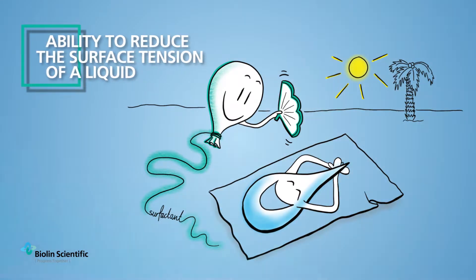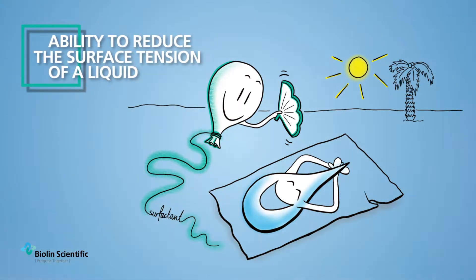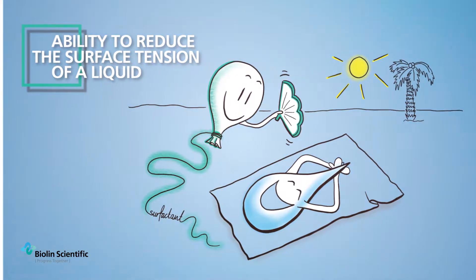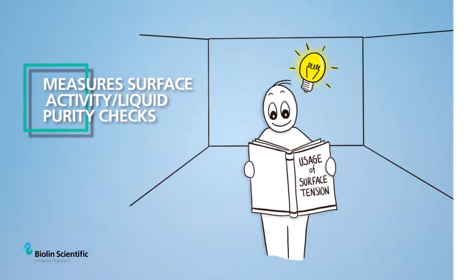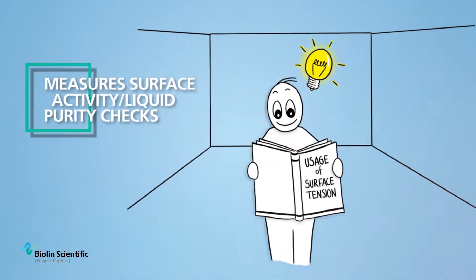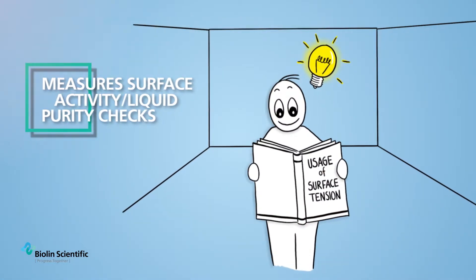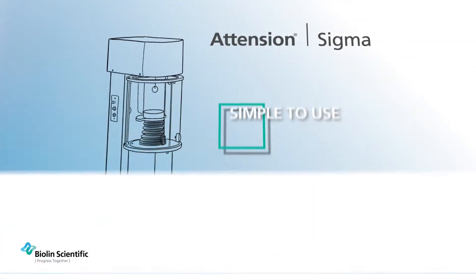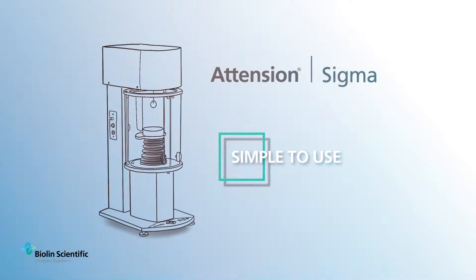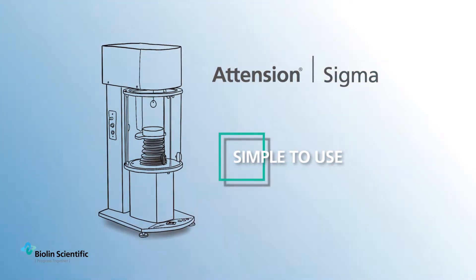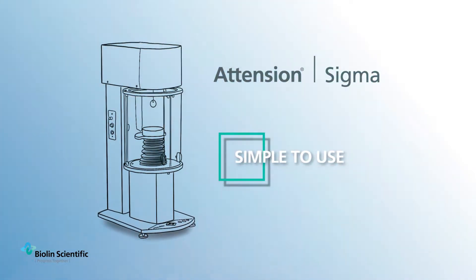The effectiveness of a surfactant is linked to its ability to reduce the surface tension or interfacial tension of a liquid. Surface tension can be used for surface activity measurement or liquid purity checks. Attention Sigma 700 and 701 perform this analysis.